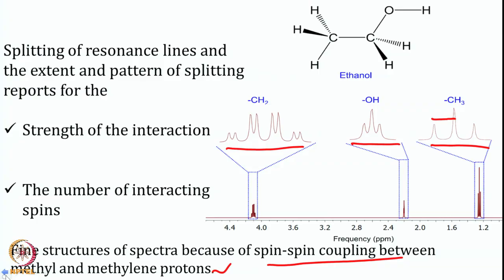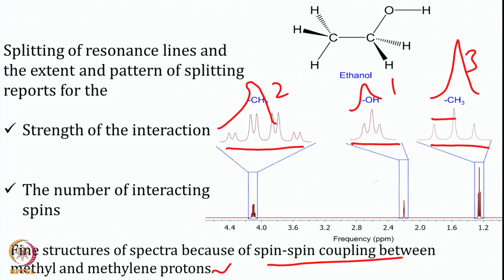Just to remind you, if there is no coupling then in case of methyl there was only one peak, and here also one peak and one for OH. The ratios were 3, 2, and 1. If you look at the OH it comes slightly upfield shifted compared to CH2, and this spectrum was recorded on neat, pure alcohol. Now we move forward and look at how does this splitting occur.